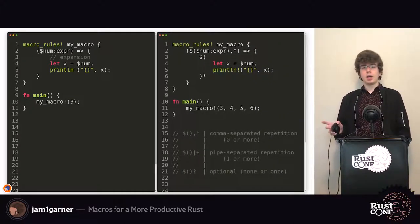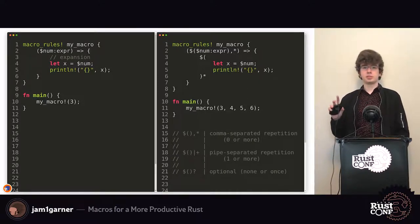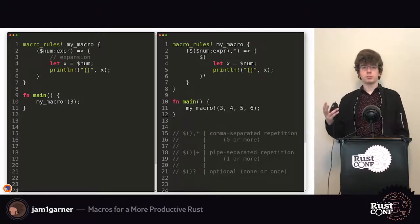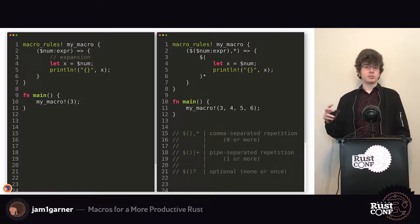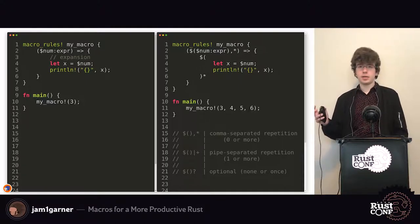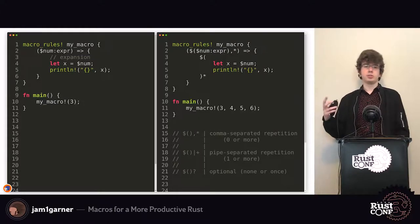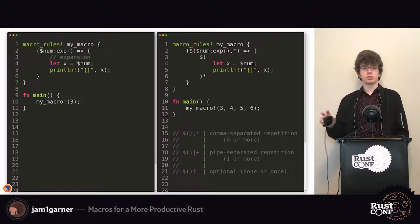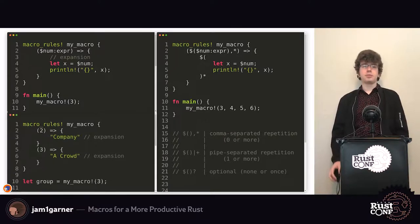Another feature of macros is that you can match against something multiple times. Kind of like regex, where you have star, plus, and question mark to control how many times you match — it's exactly the same in Rust. You define a capture group and say how many times you want it to repeat: star for zero or more, question mark for once or zero times.